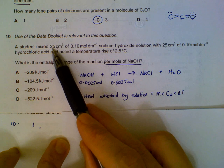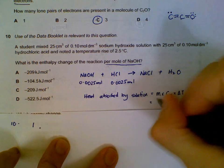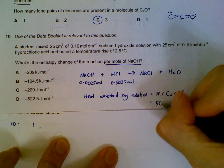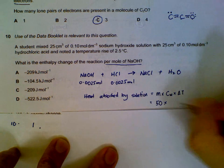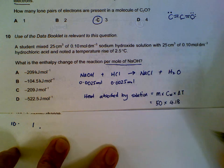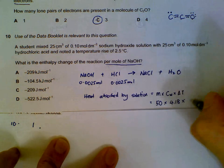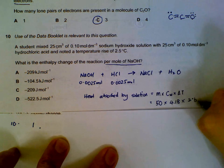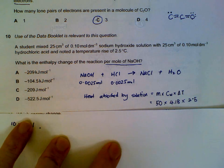We estimate that 50 cm³ of solution equals 50 grams, the same as the density of water, so the mass is 50 grams. Specific heat capacity from the data booklet is 4.18 J g⁻¹ K⁻¹. The change in temperature is 2.5 degrees. This gives us the energy absorbed by the solution.